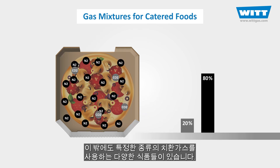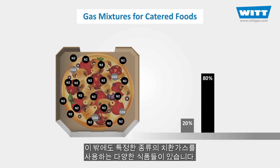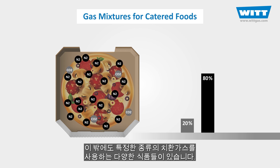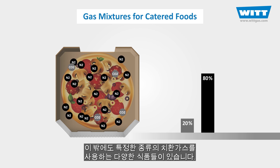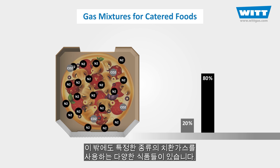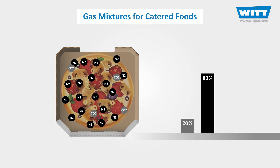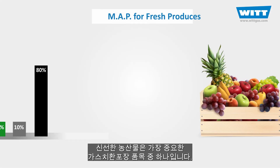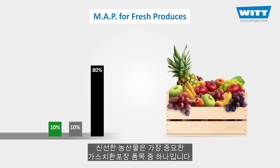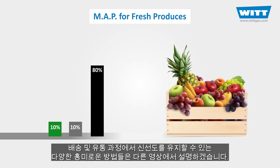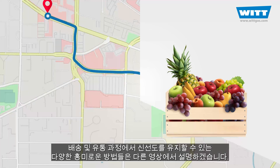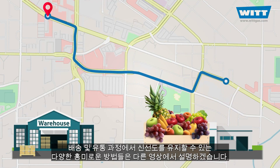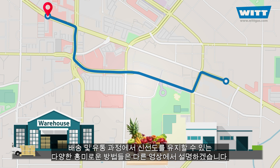There are lots of other food categories requiring specific MAP gas mixtures. Fresh produce is one of the most important types, and we'll show you in another video a new exciting method for keeping them fresh during transport.